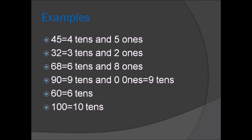Examples. Forty-five equals four tens and five ones. Thirty-two equals three tens and two ones. Sixty-eight equals six tens and eight ones.